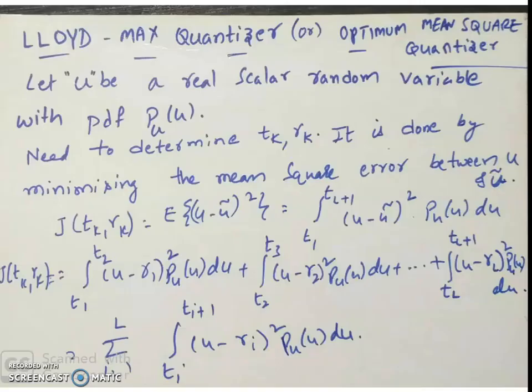There is a special case here: the Lloyd-Max quantizer, or optimum mean square quantizer. The output variable u tilde is supposed to be pretty much similar to the input variable u — u tilde should be almost equal to u — because we do not want to lose information. The Lloyd-Max quantizer minimizes the mean square error between u and u tilde.